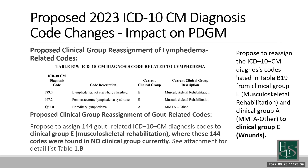The lymphedema codes are being moved from musculoskeletal rehab and MMTA other — all three of these codes are now being moved to wound care, which is a huge deal. If you have patients that have had these lymphedema codes in the past, you were not getting wound care credit for those. You will now get wound care credit as we move into 2023.